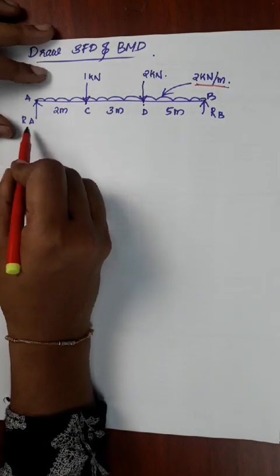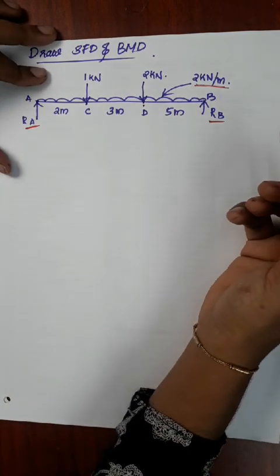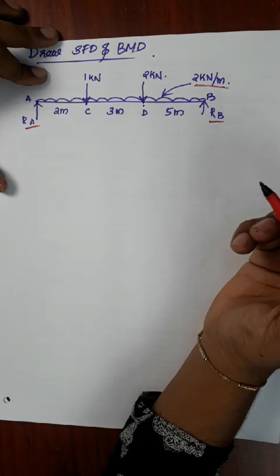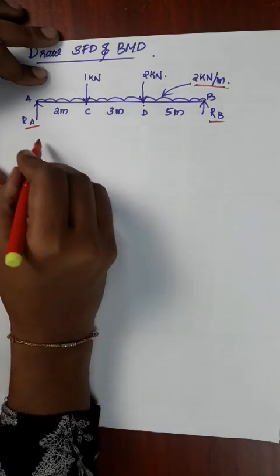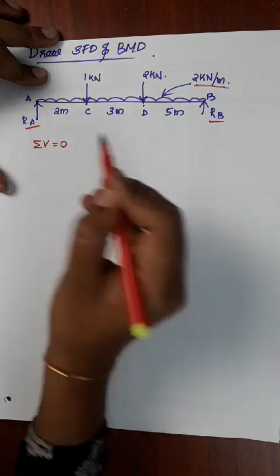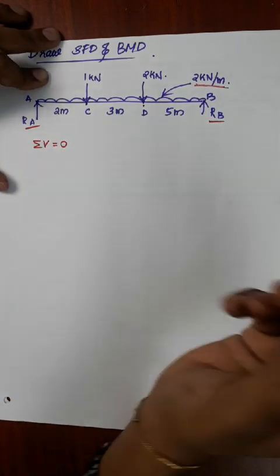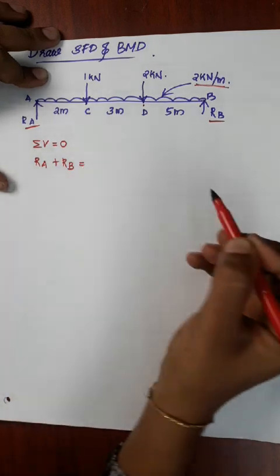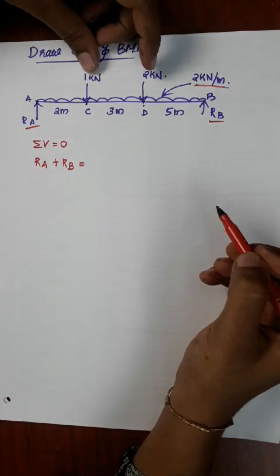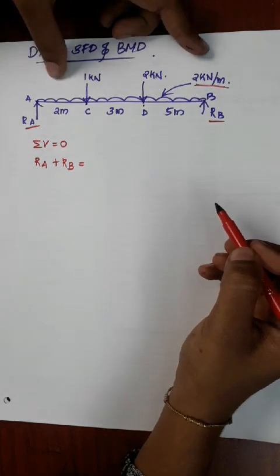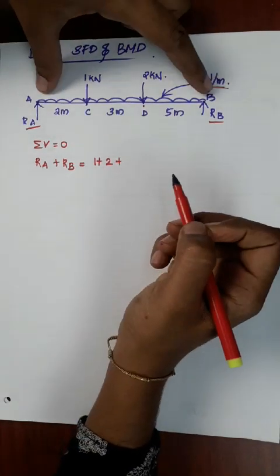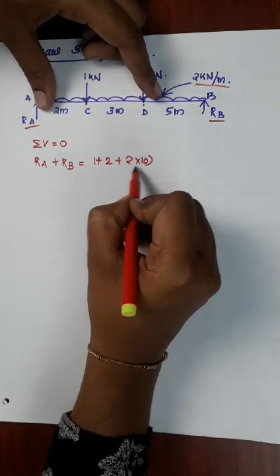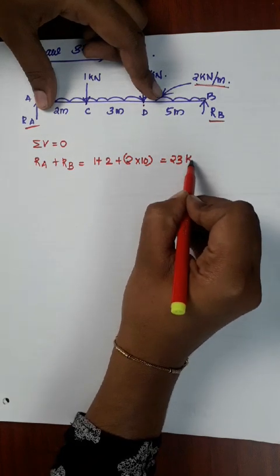We will study the first procedure to find reactions RA and RB using Engineering Mechanics. Applying ΣV = 0: RA plus RB equals the total load. The loads in the downward direction are 1 kN, 2 kN, and the UDL of 2 kN/m over the span, giving a total of 23 kN.